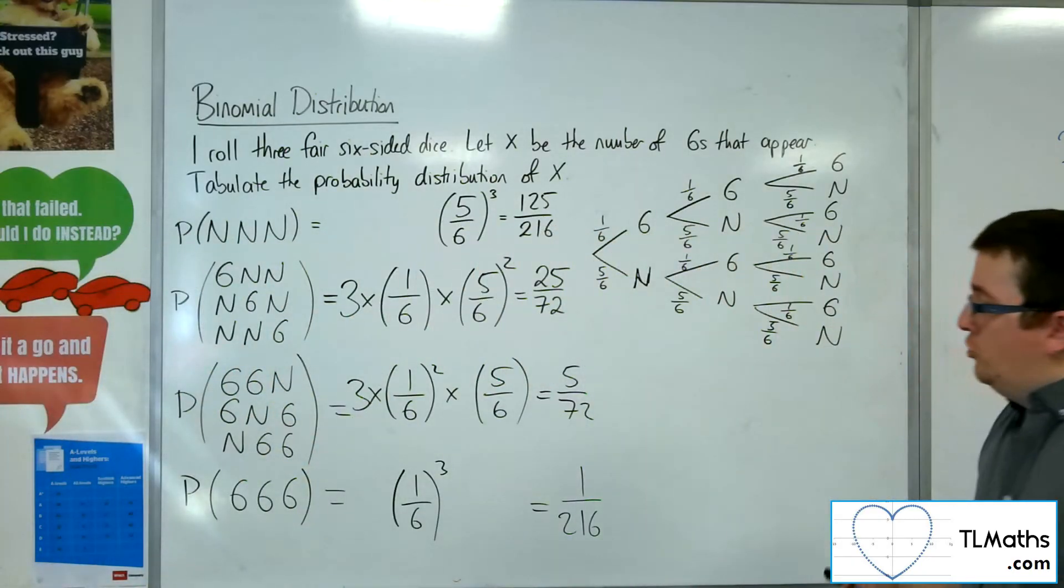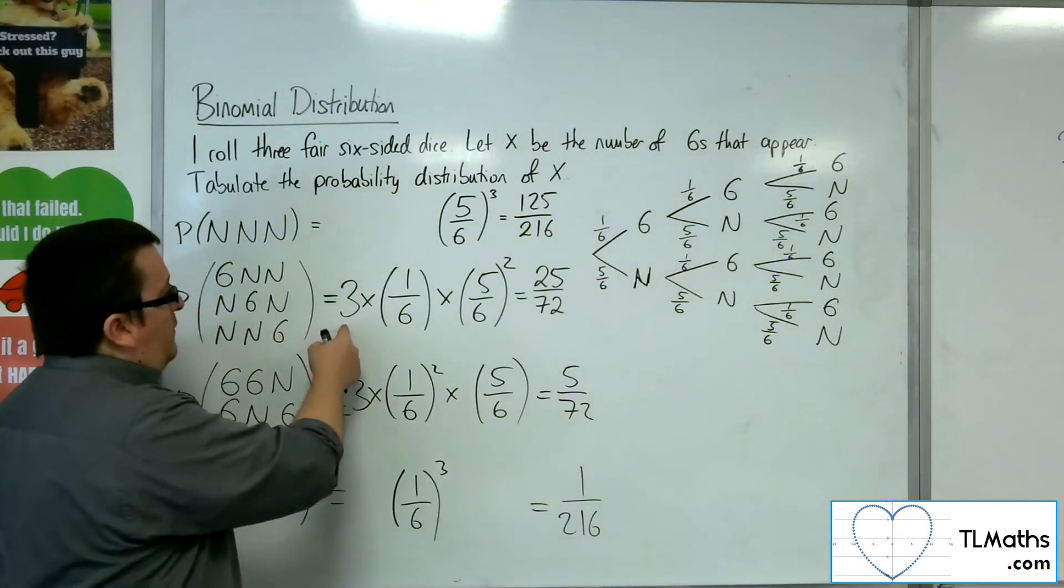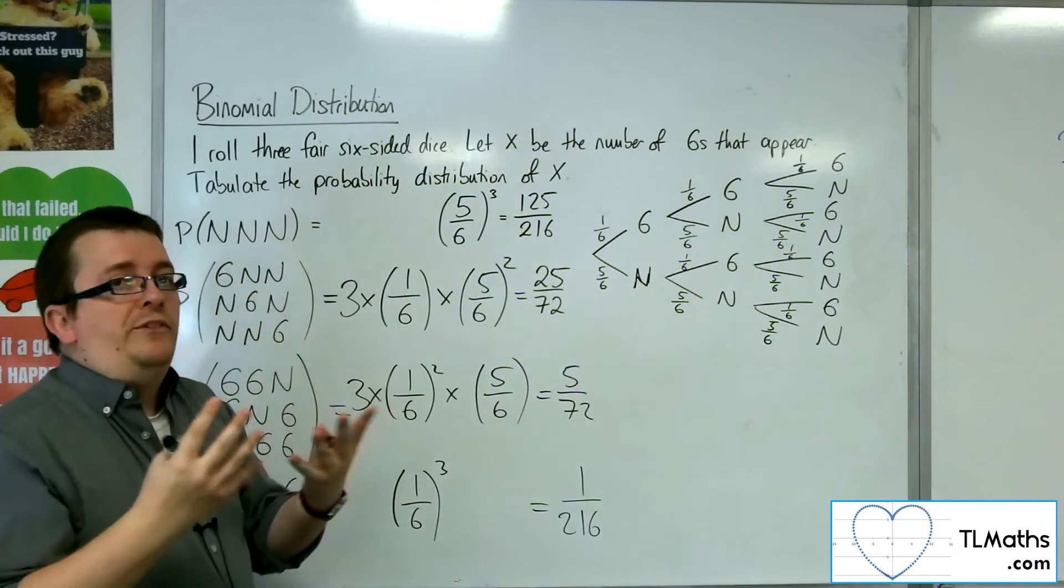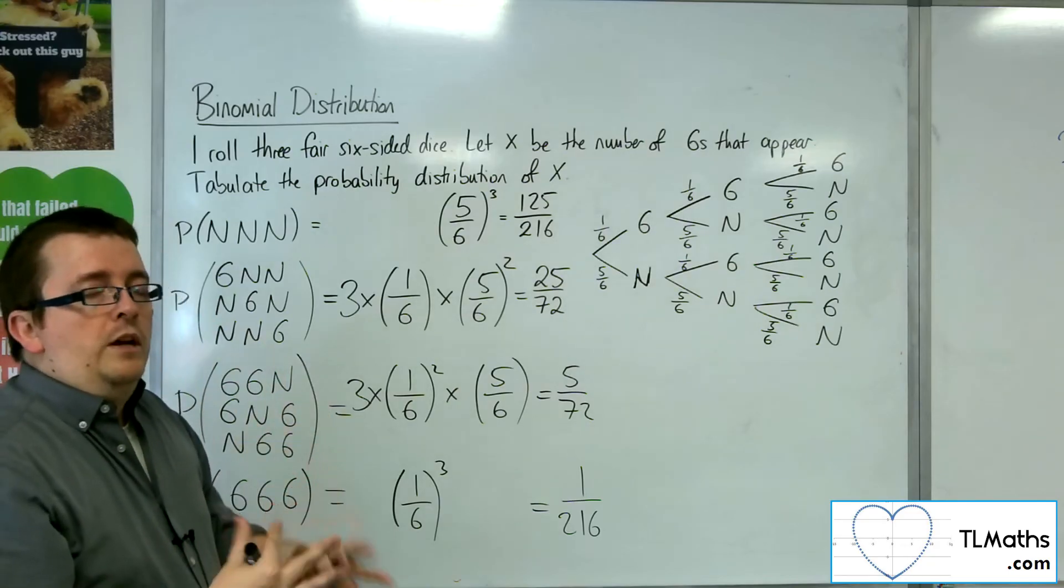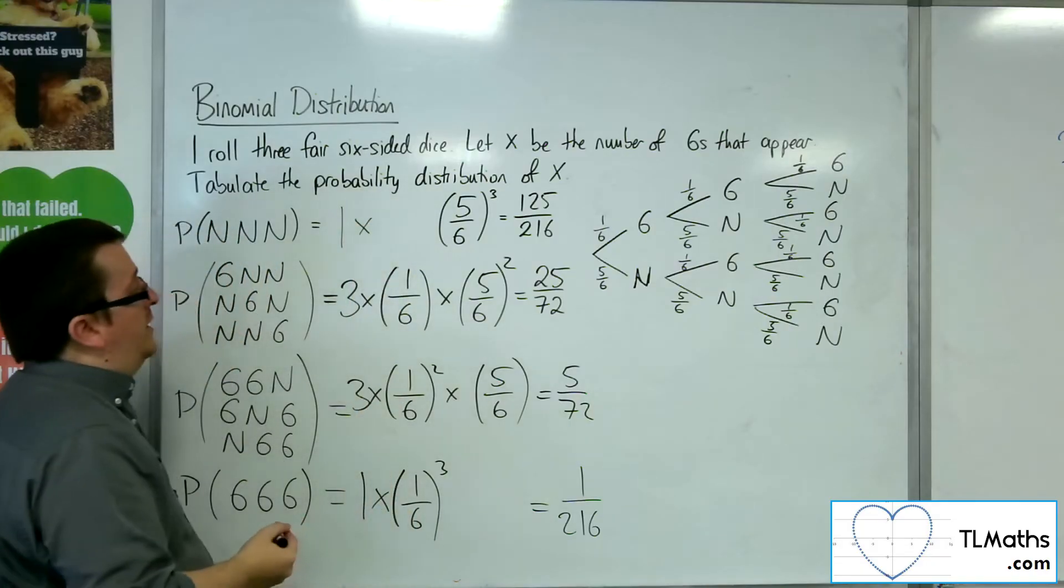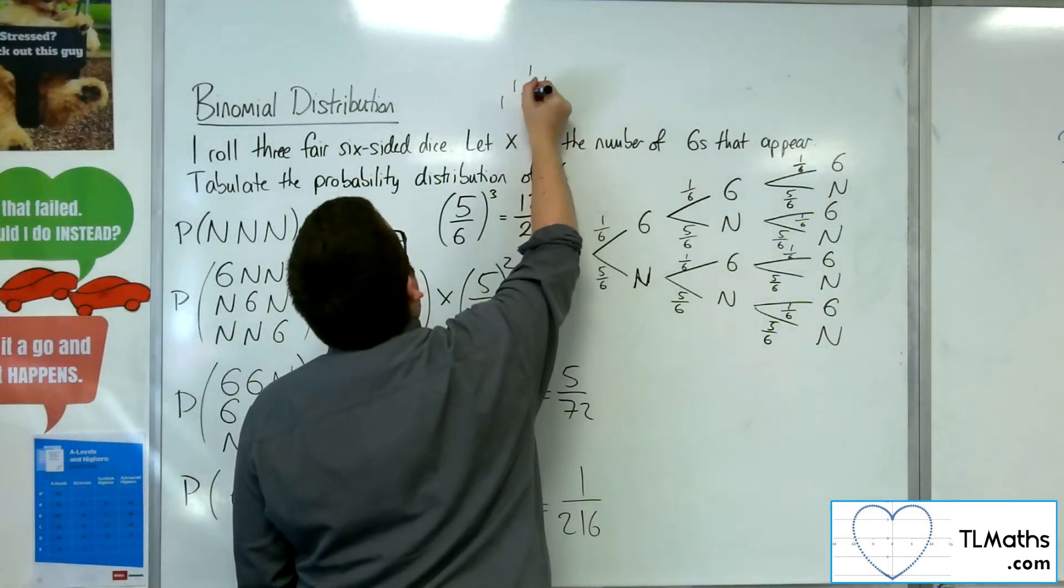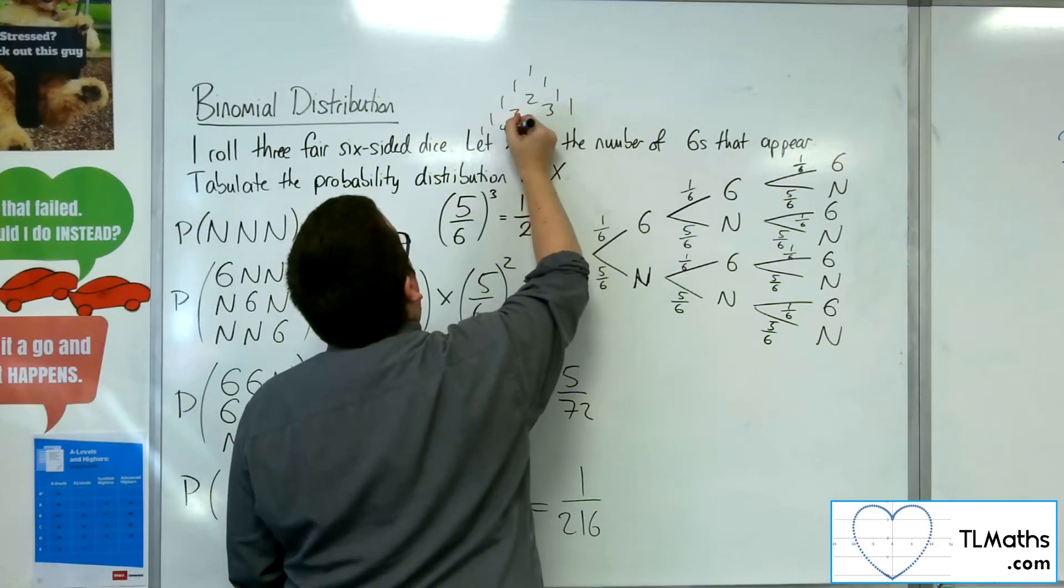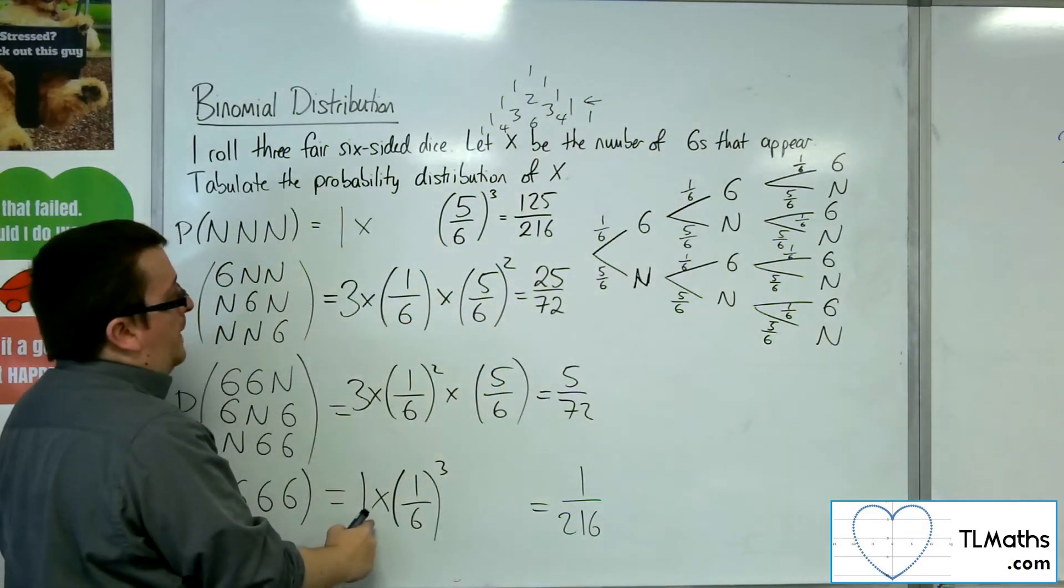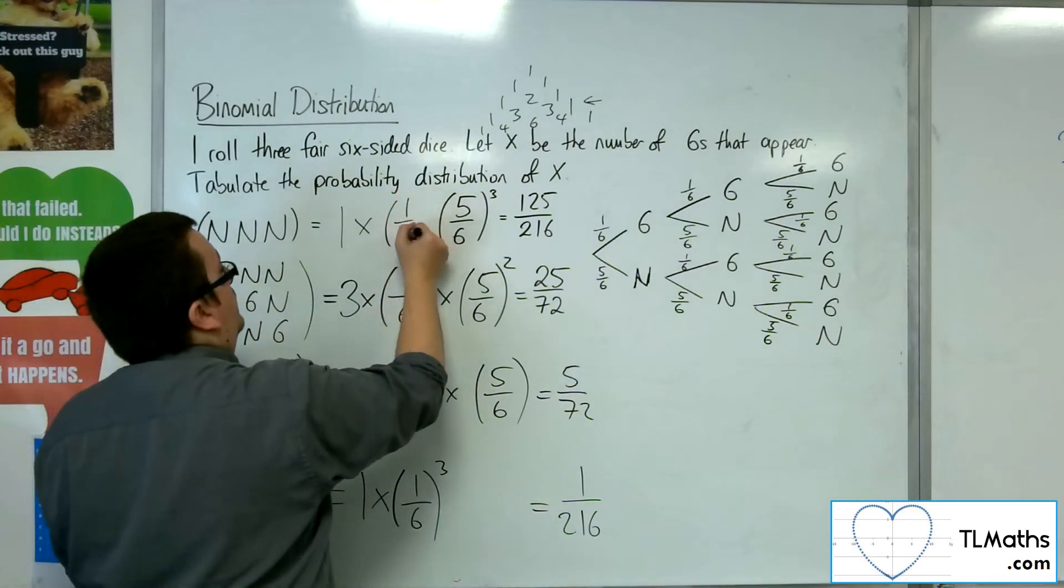So if we start building up this picture a little bit more, I've left these gaps in here for a reason. Because really, what we've got here is this number of possible combinations is coming directly from NCR, directly from Pascal's triangle. So if you've looked at binomial expansion already, then you should be very familiar with how this picture is building up. So Pascal's triangle here, 1, 1, 1, 1, 2, 1, 1, 3, 3, 1, 1, 4, 6, 4, 1. We're looking at that row there. We can see the 1, 3, 3, 1.